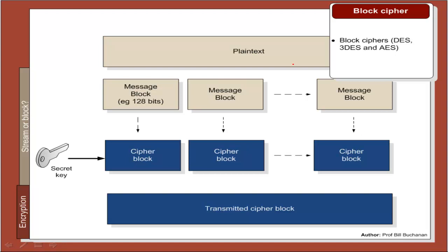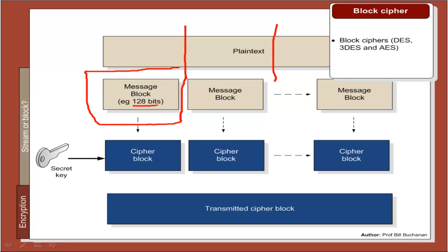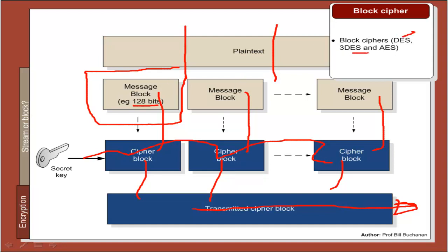Some of the methods we use are either block ciphers or stream ciphers. With a block cipher, we take our text and segment it up into message blocks — each block is a certain size such as 128 bits. Each message block is converted into a cipher block and joined back together into a cipher stream. The secret key is then added to each of the cipher blocks. Typical methods include DES, 3DES, and AES.